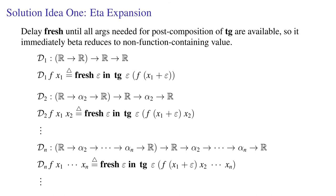We could use eta expansion. We would delay the fresh until all the arguments needed for post-composition of tangent are available, so it immediately beta reduces to a non-function containing value. So, we'd have separate versions of d for scalar functions, binary curried functions, etc.